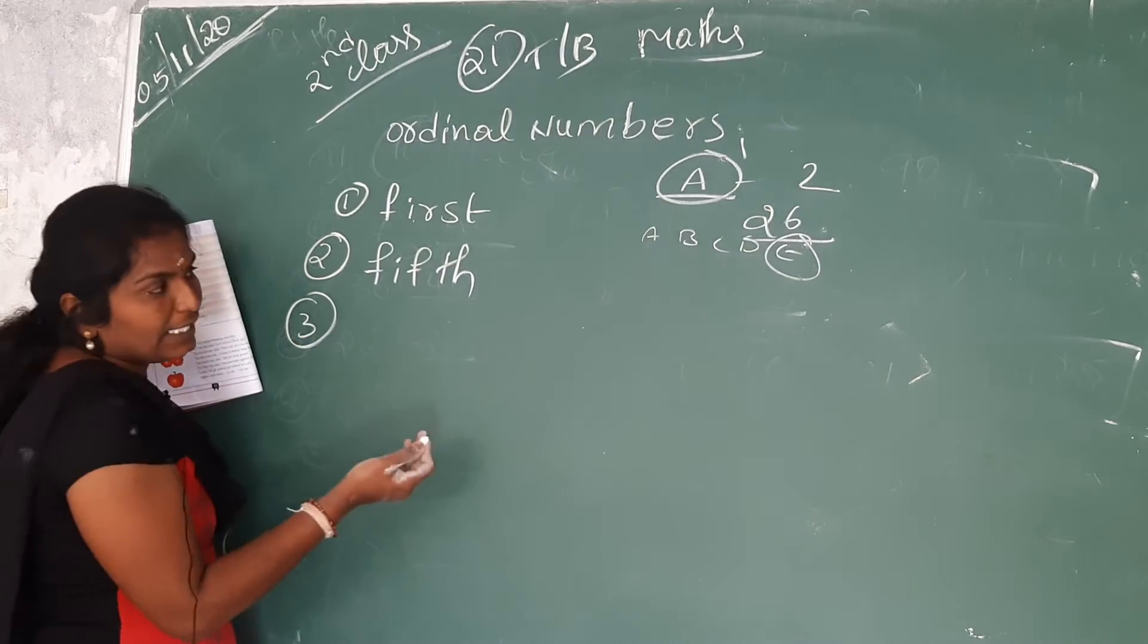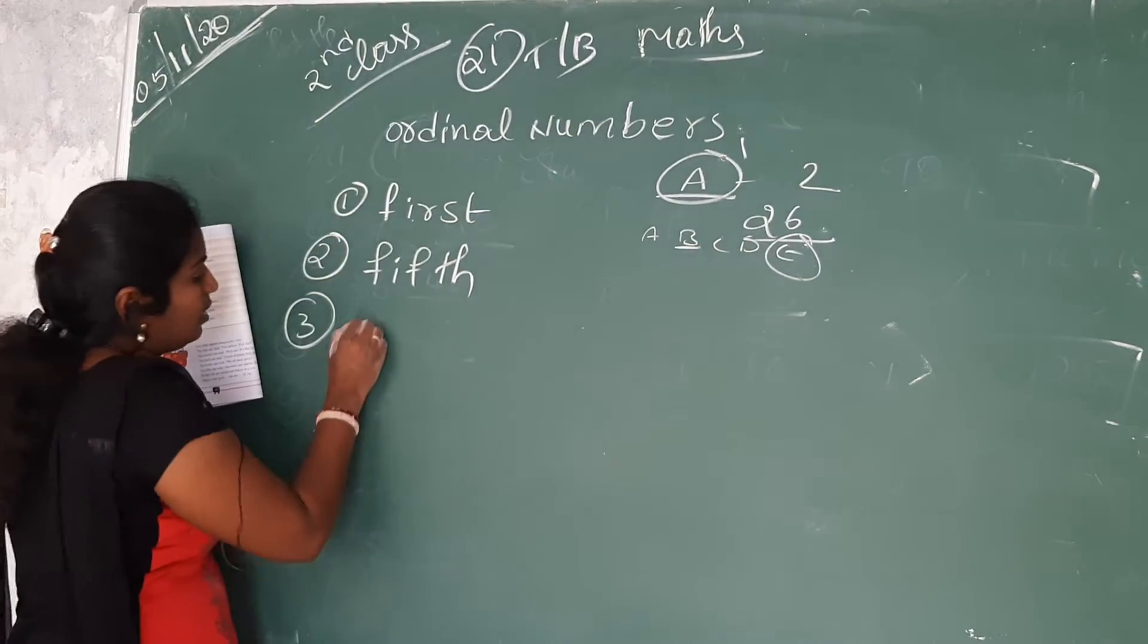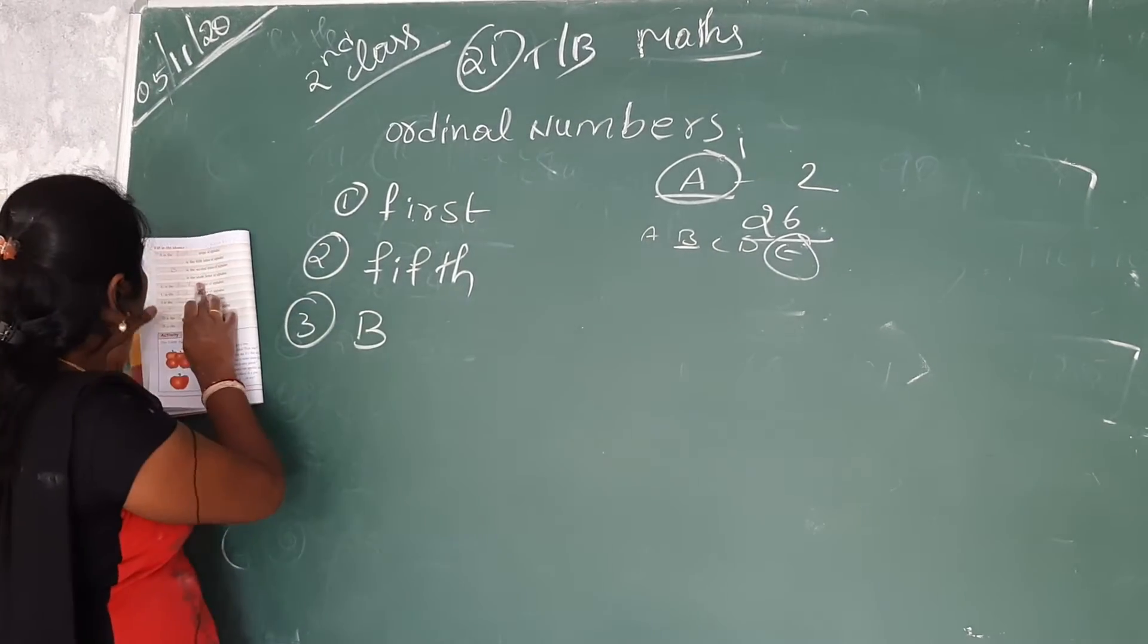Third one. Dash is the second letter. Second letter is B. B is the second letter. Write B.